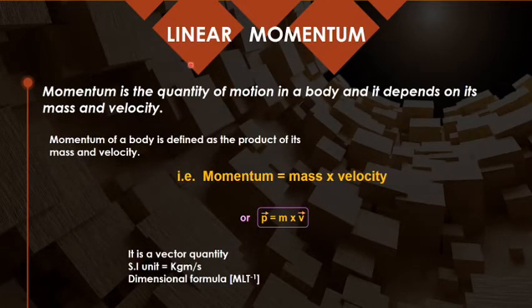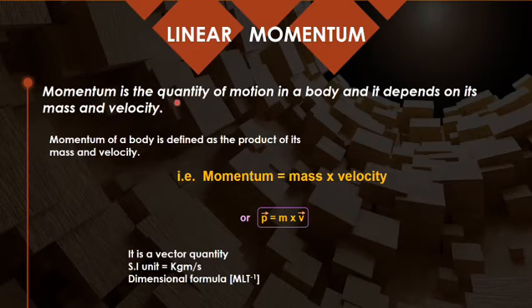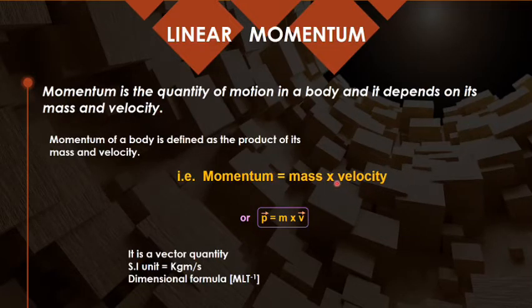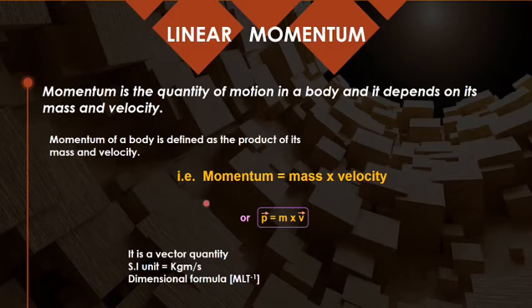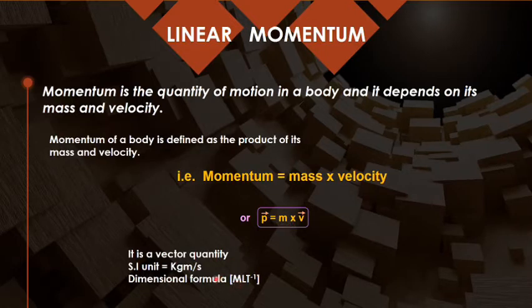The next physical quantity is momentum. Momentum is a vector quantity which depends upon mass and velocity. You can define it as the measure of the quantity of motion of a body. Linear momentum is the product of mass and velocity. Since velocity is a vector, linear momentum is also a vector quantity. Its SI unit is kilogram meter per second, and its dimensional formula is MLT⁻¹.